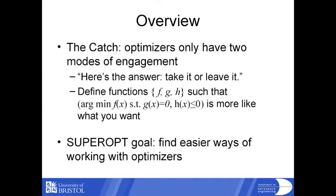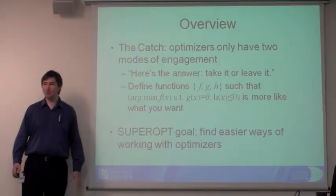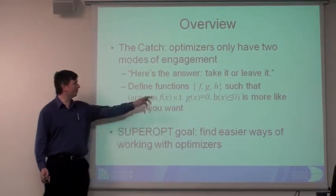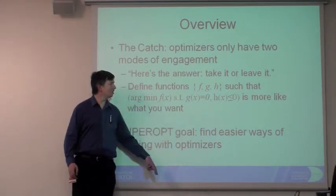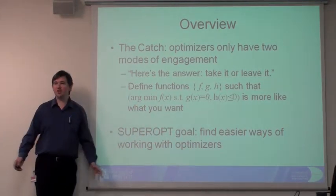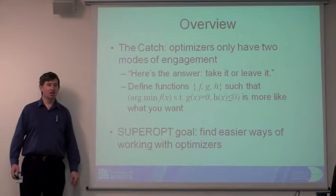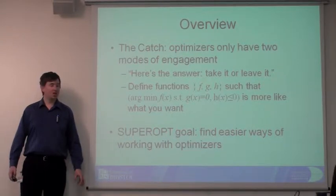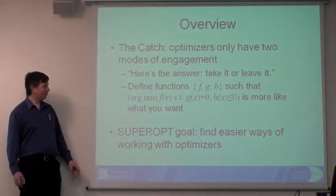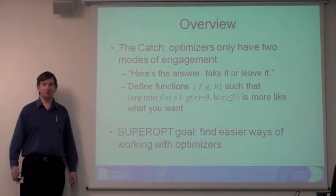They've essentially got two ways of working. You can get an answer - a bunch of numbers - and that's it. You either take it or leave it. Or you can get heavily into the mathematics: defining functions f, t, and h, writing your mathematical optimization - minimize f subject to a set of equality constraints, a set of inequality constraints - and off you go. But it's a very mathematical way of working, not something anyone's going to be playing with operationally. So our question is whether we can find easier ways of working with the optimizers.